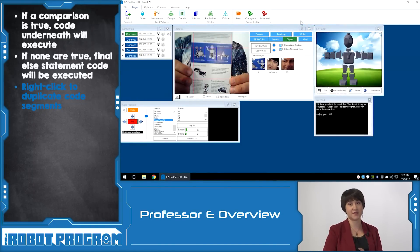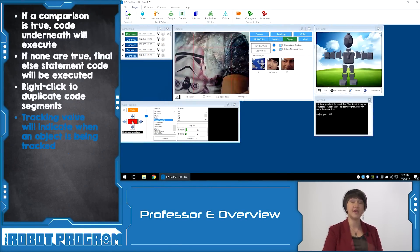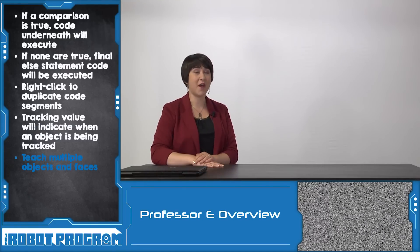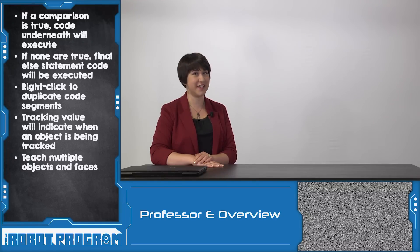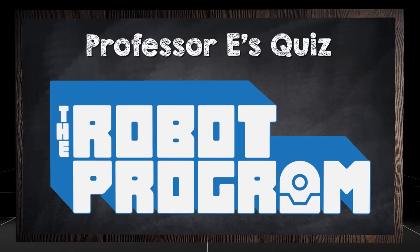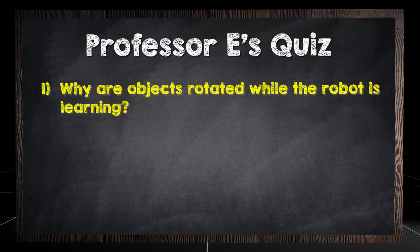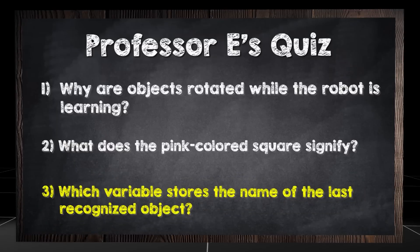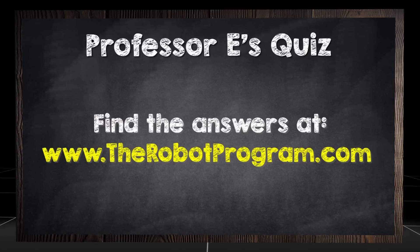Once saved, this script will be executed once the robot begins to detect an object. Underneath the camera preview, you can watch the tracking value to see when an object is no longer being tracked and a new object can be detected. You can try teaching your robot different objects and share your results with the EasyRobot community. Thanks for watching this episode and we'll see you next time. Check out these questions: Why are the objects rotated while the robot is learning? What does the pink colored square signify? Which variable stores the name of the last recognized object? Find the answers at TheRobotProgram.com.